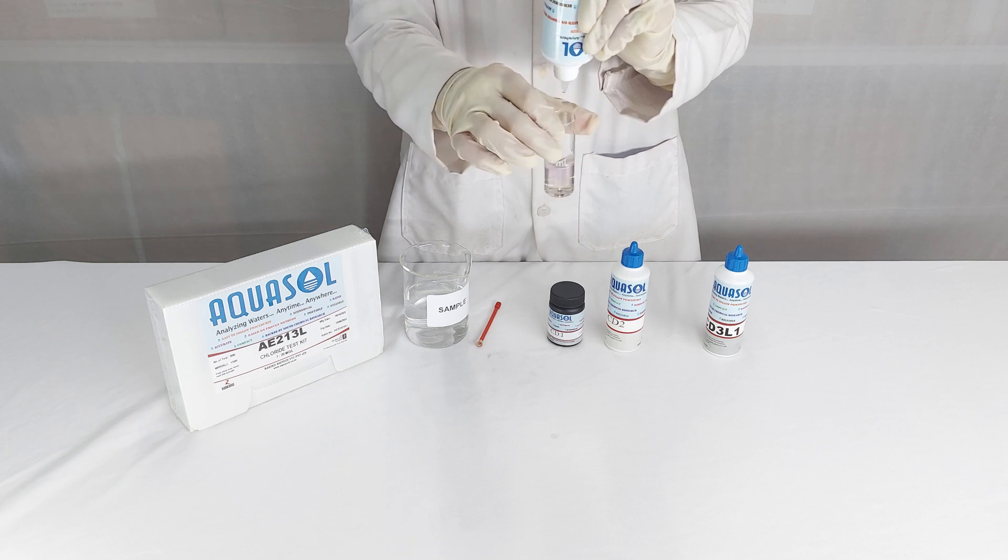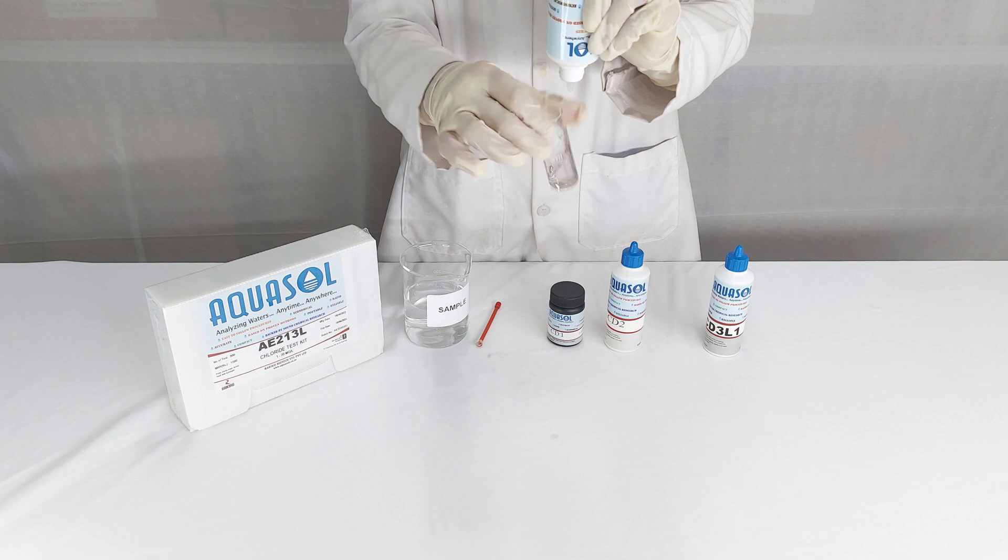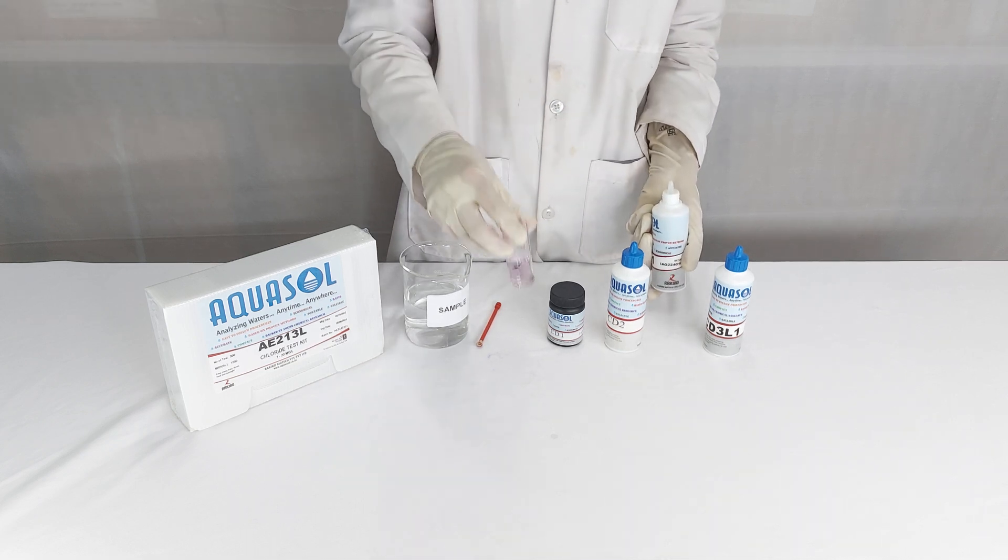Calculation: The number of drops of CD3L1 reagent multiplied by 1 is the chloride of the sample.